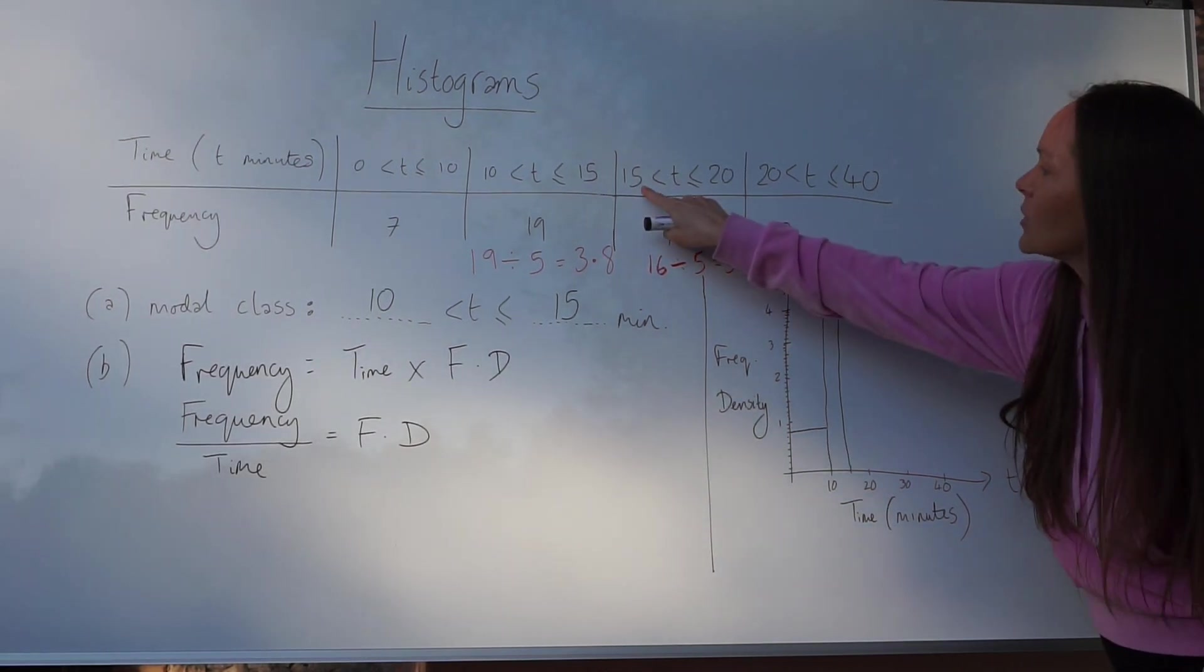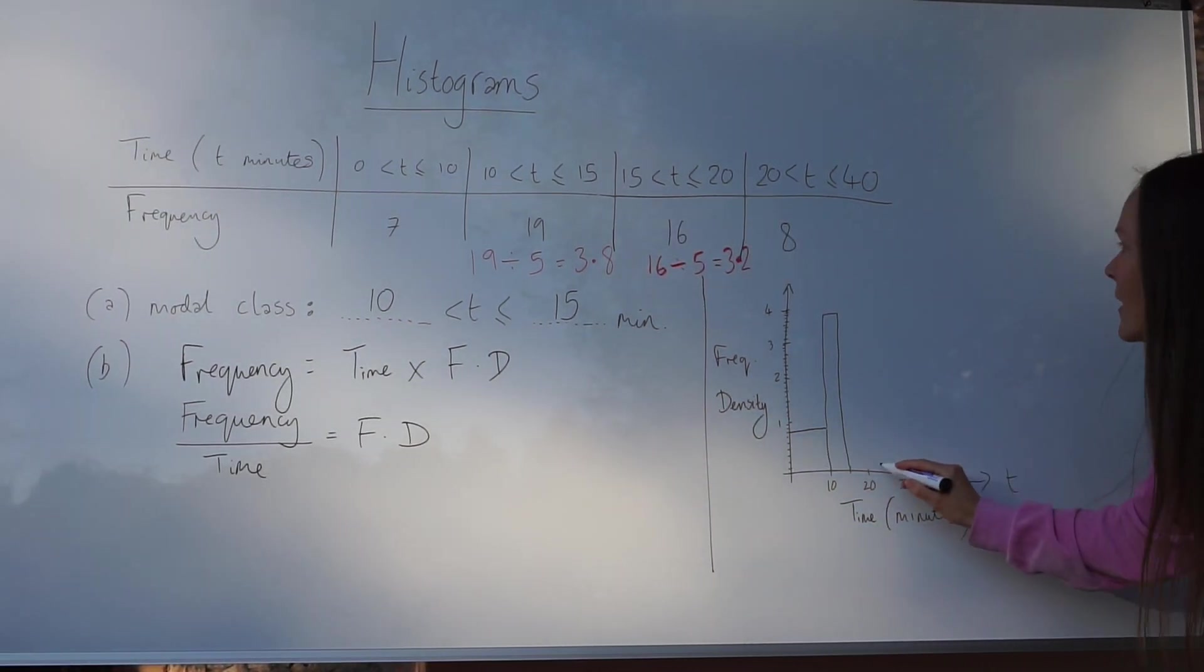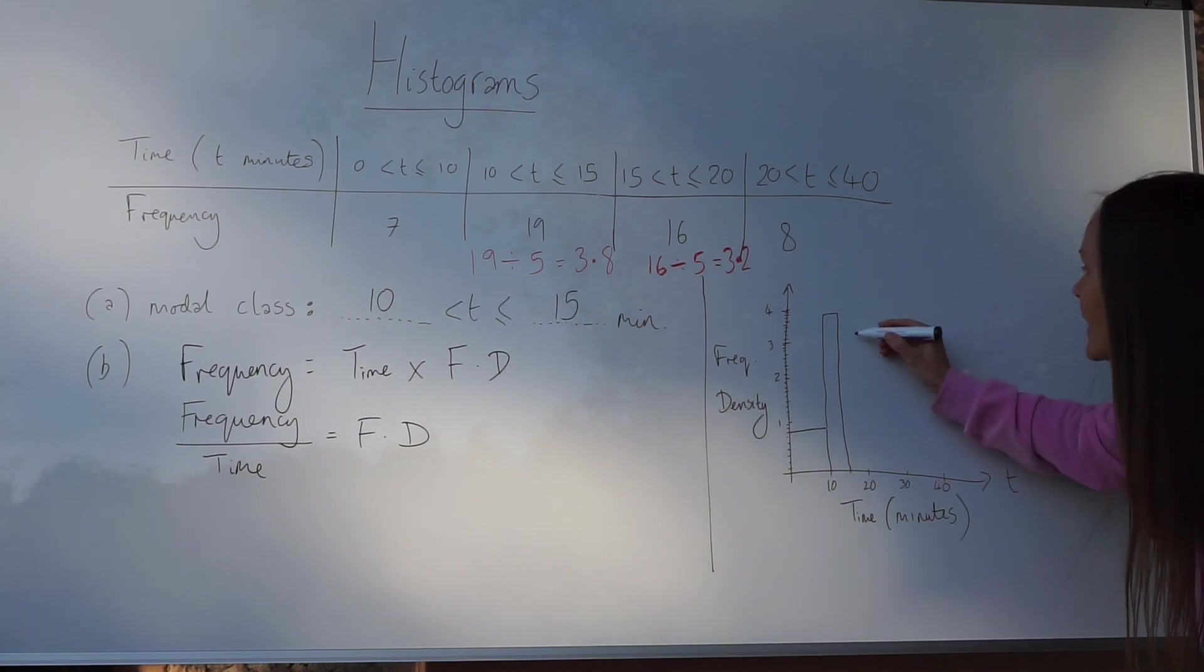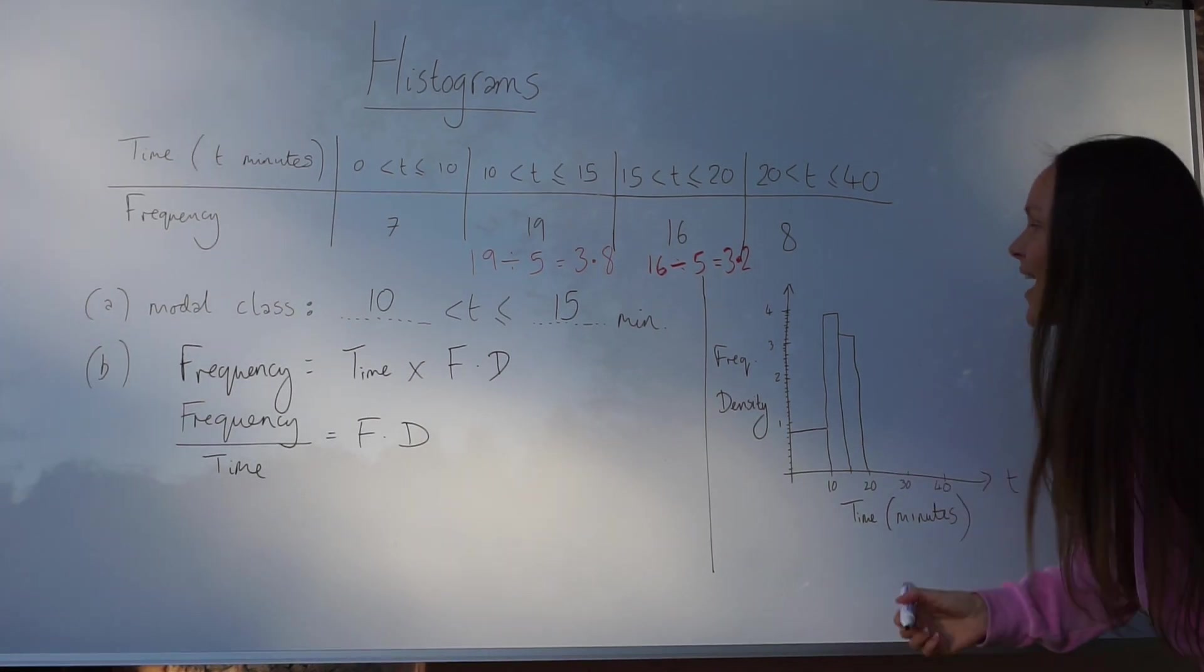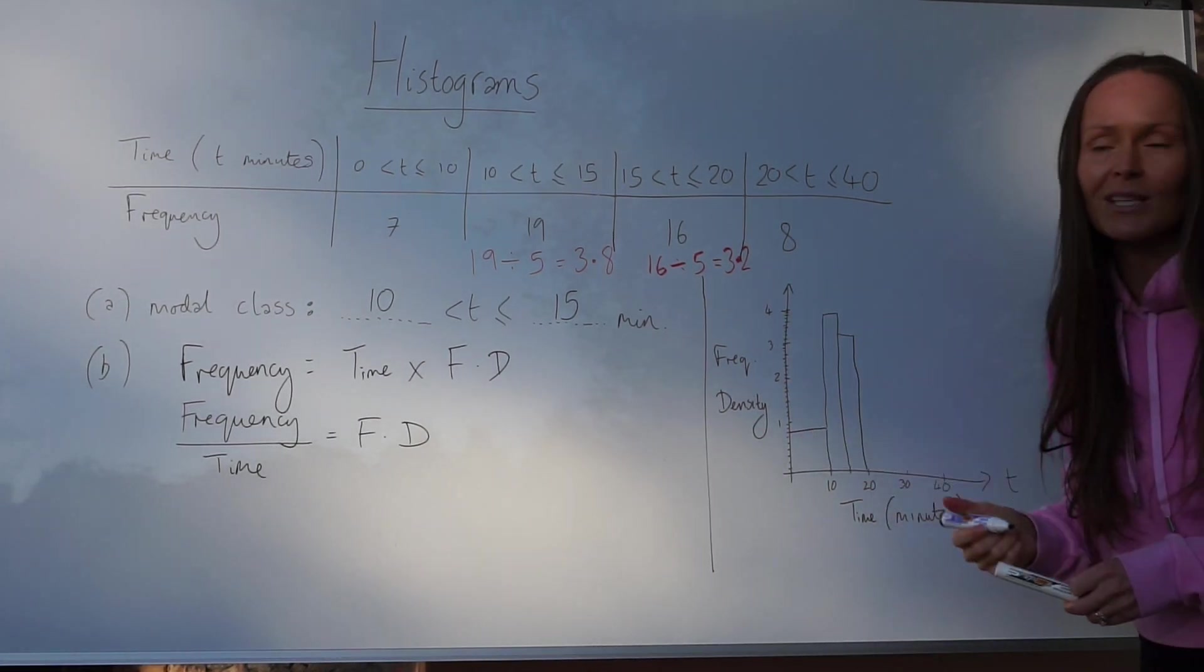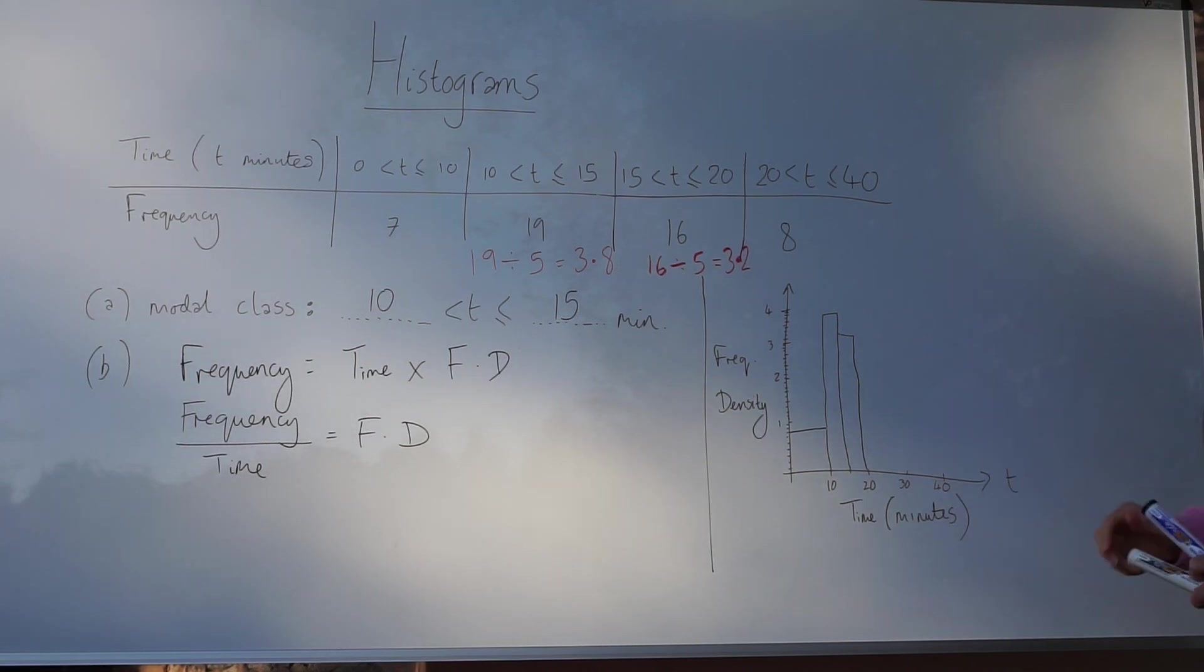This time the bar goes from 15 to 20, so another width of 5, and it goes up to 3.2. Obviously in an exam you would use a ruler and you'd have an accurate grid in which to draw these bars. Mine's a little bit messy there.